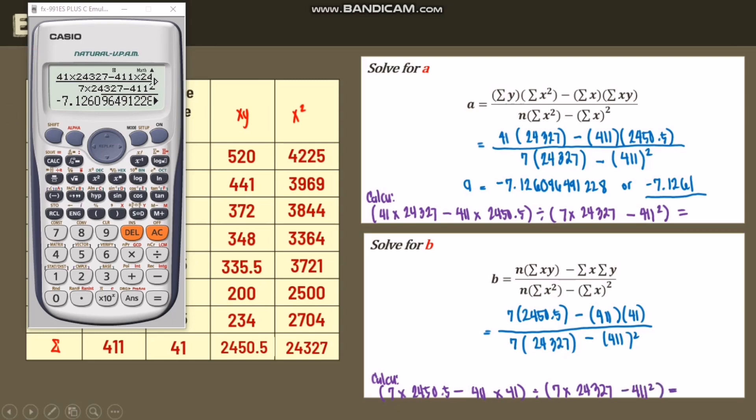And let's compute it in our calculator. We have, I'll use the violet one. Open parenthesis, 7 times 2,450.5 minus 411 times 41, close, divide, open. 7 times 24,327 minus 411 squared. And then close, equals.